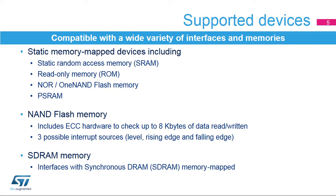The FMC also interfaces with NAND Flash memories and supports error code correction, or ECC, for up to 8 bytes of data read or written. Three interrupt sources can be configured to generate an interrupt when a rising edge, falling edge, or high level is detected on the NAND Flash ready/busy signal.